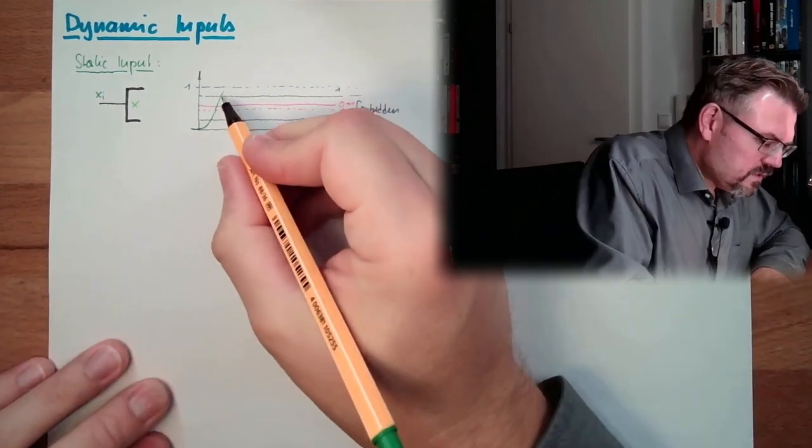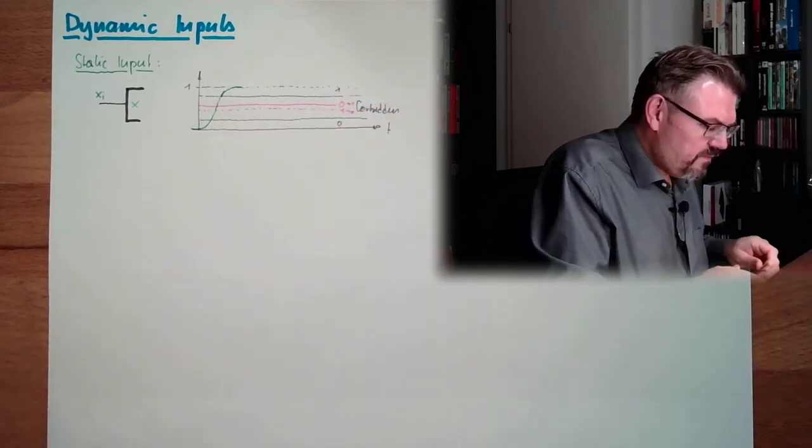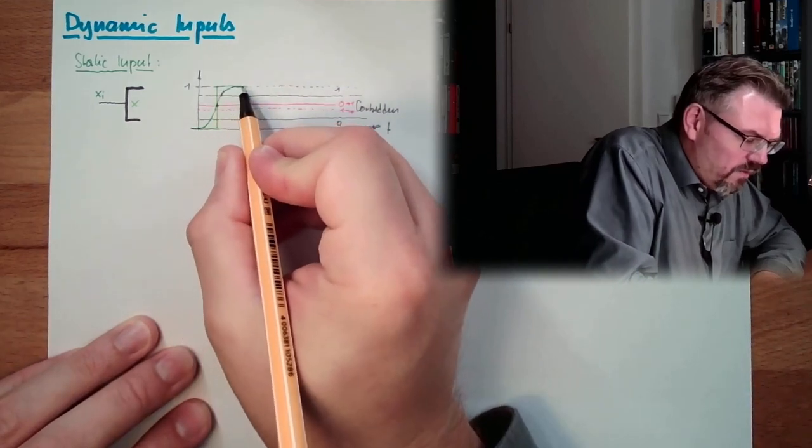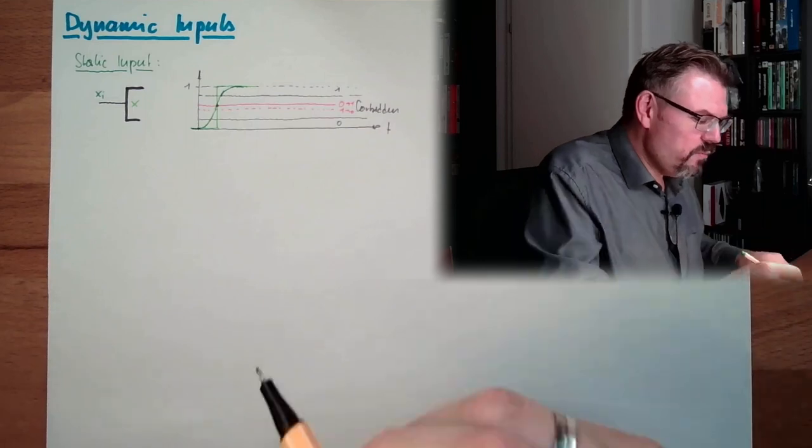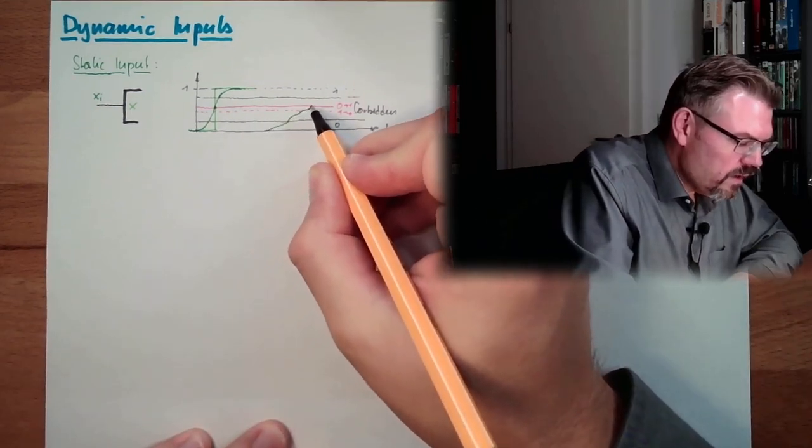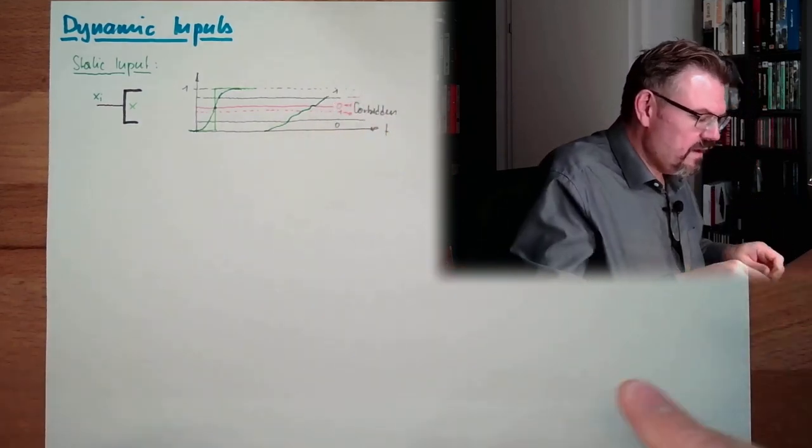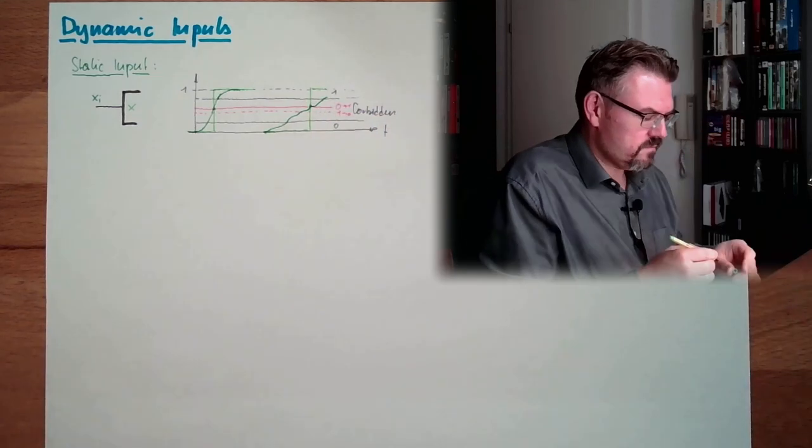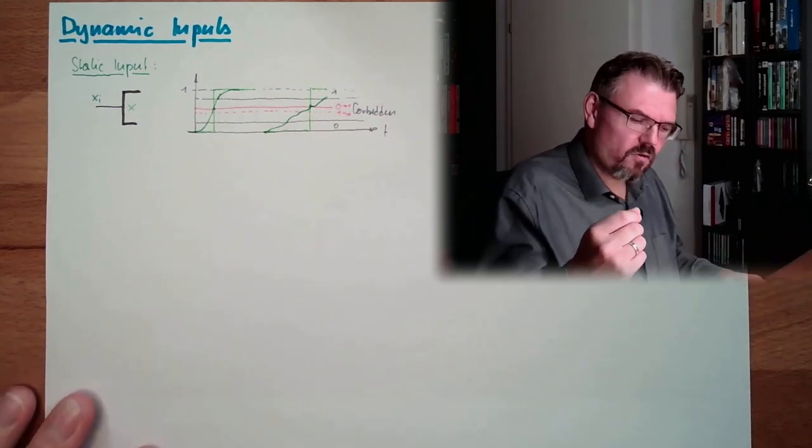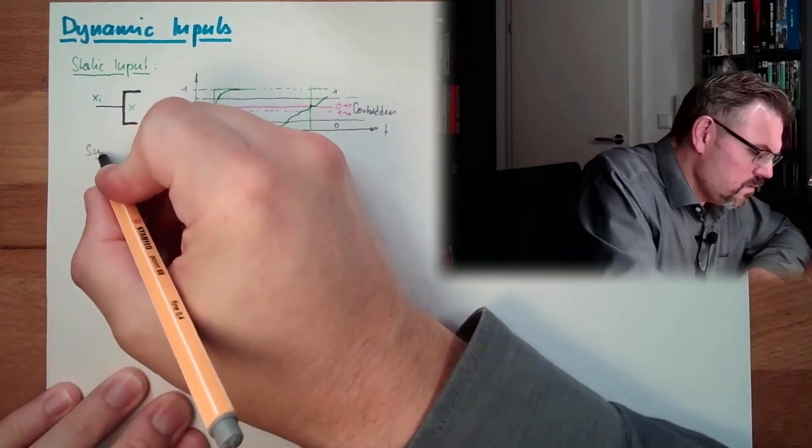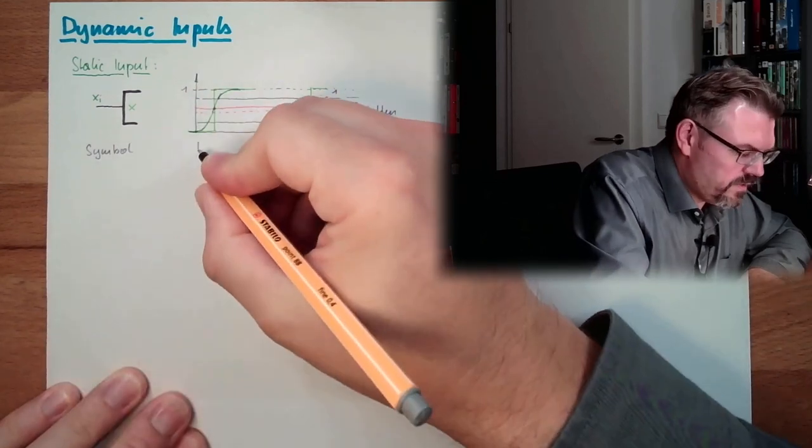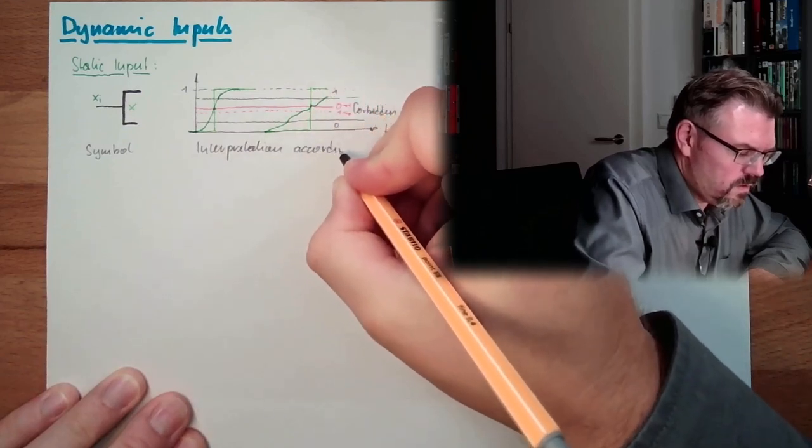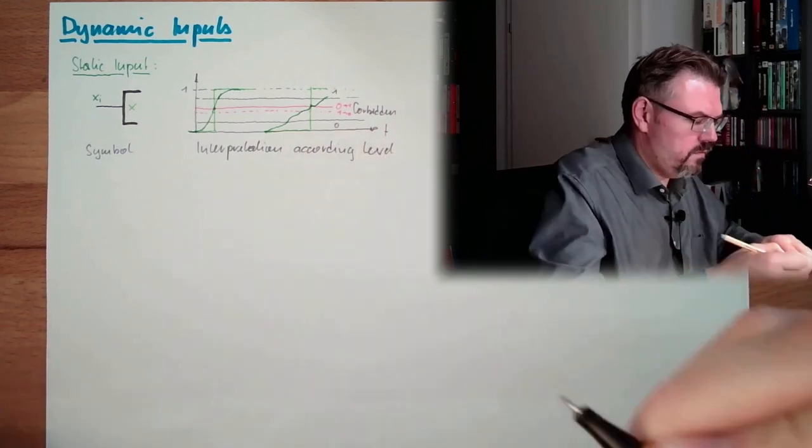So if the input is going up here, exactly when we reach this trigger level, which can be different from element to element, we will switch to 1. This is the interpretation of our input. And even if the input is slowly crawling above this trigger level, then the input is interpreted exactly at reaching this, as 1. So the interpretation is according to the trigger level. That's the static input.